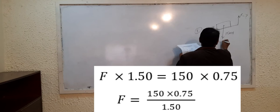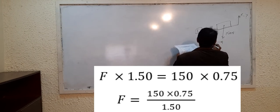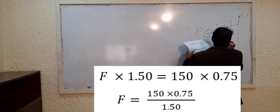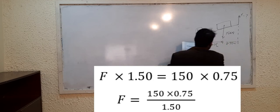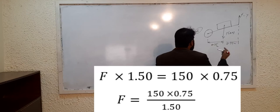The distance from the pivot is 0.75 meters. The distance of the force from this is 0.75 meter. The total distance from the pivot of the force—you will have to see how much is the distance of this force—is 1.5.